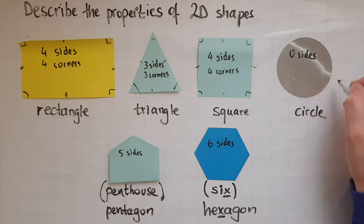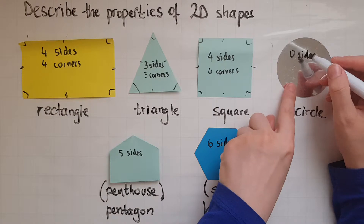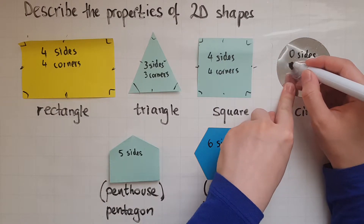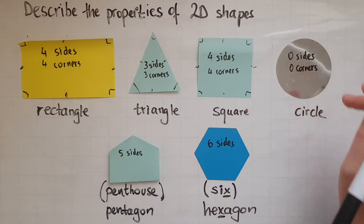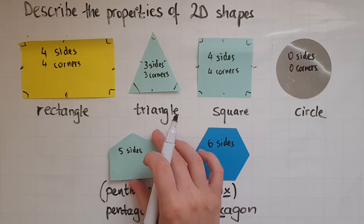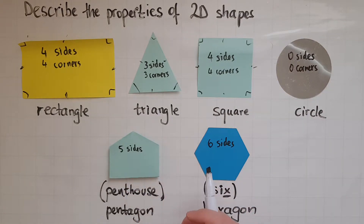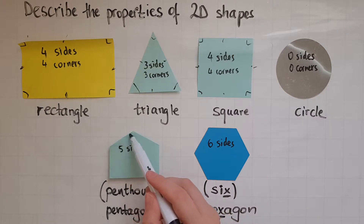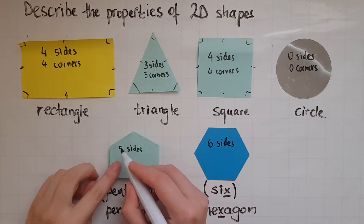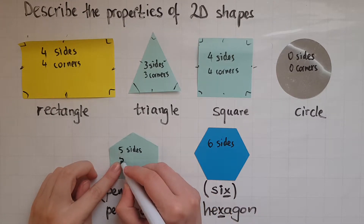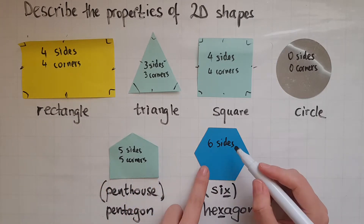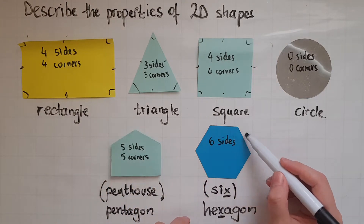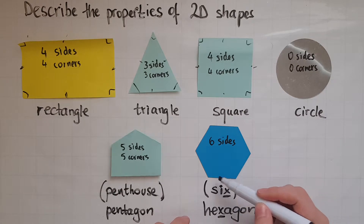In a circle, there is no corner. In a pentagon, we have one, two, three, four, five. In a hexagon, we've got one, two, three, four, five, six.